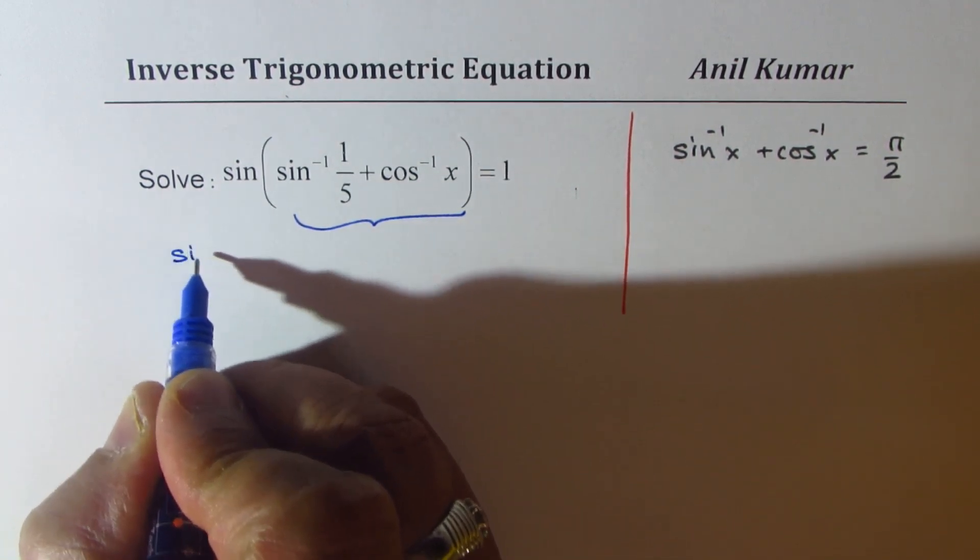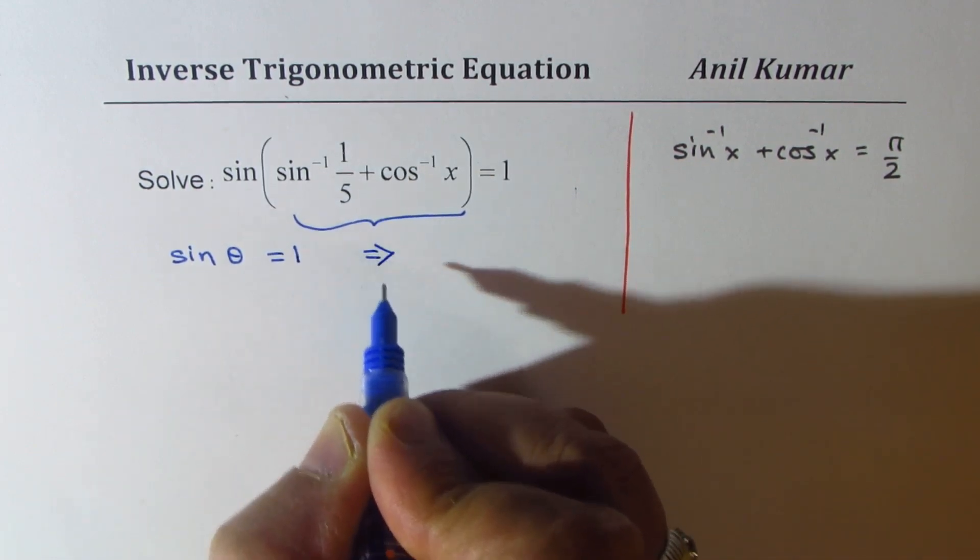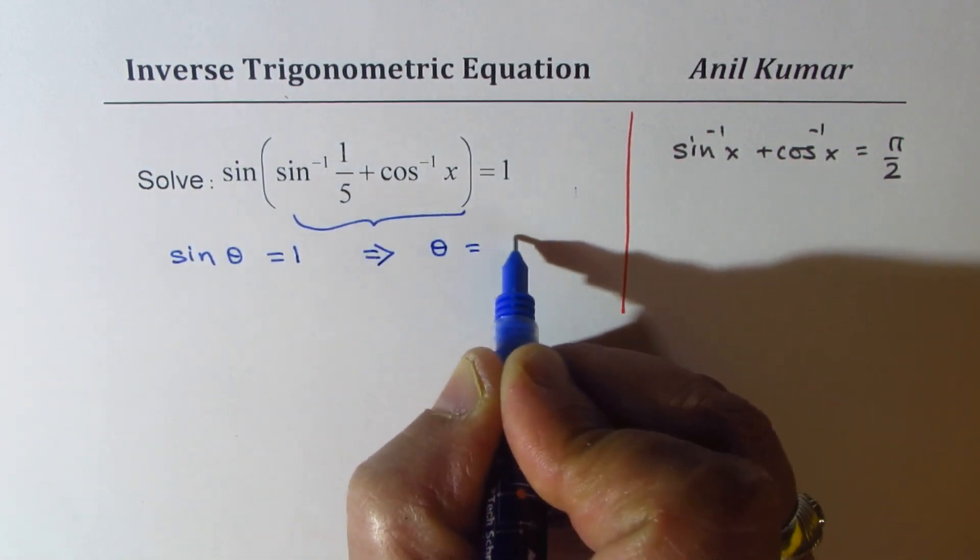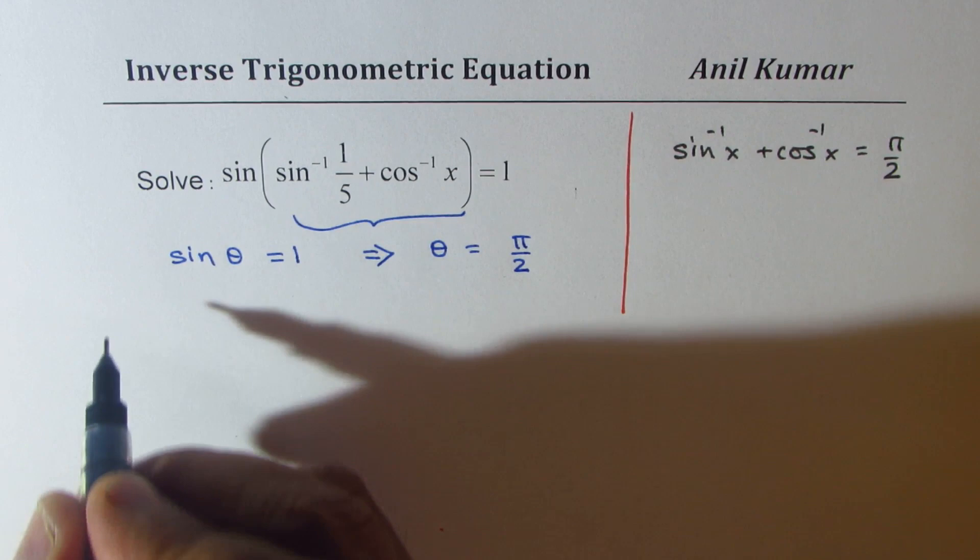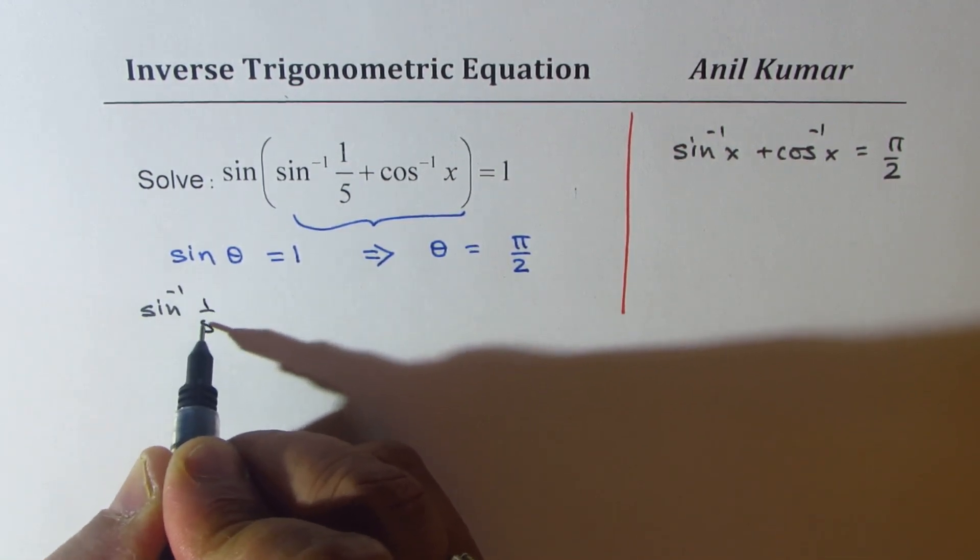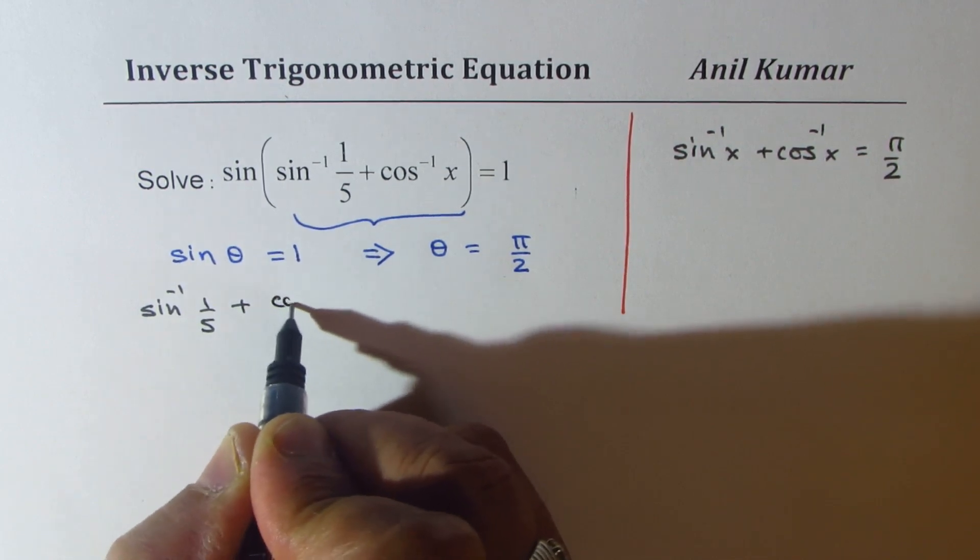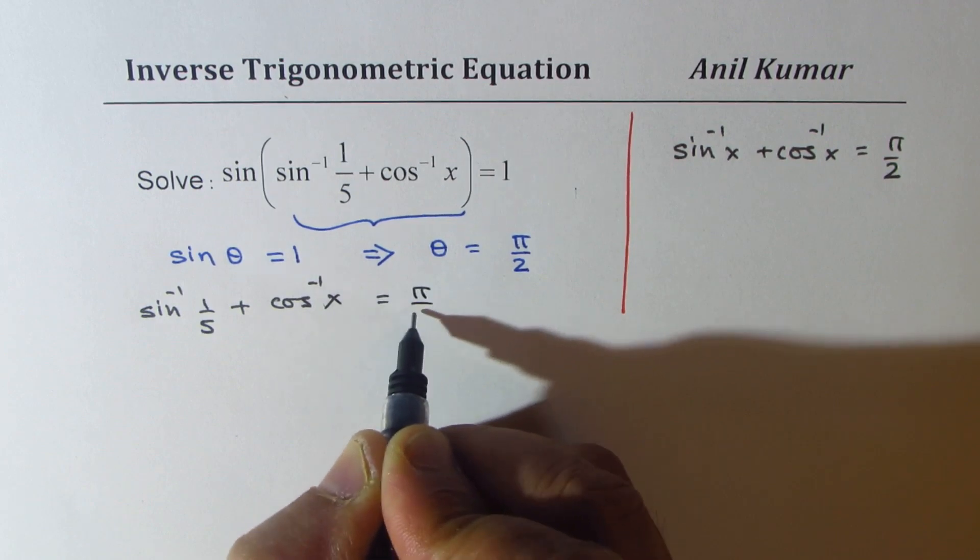Then, we know that sine theta equals to 1 implies that theta should be equal to pi by 2. So from here, we can write that sine inverse of 1 over 5 plus cos inverse of x is equal to pi by 2.